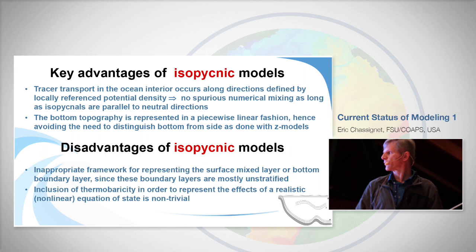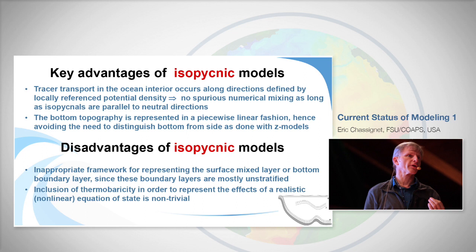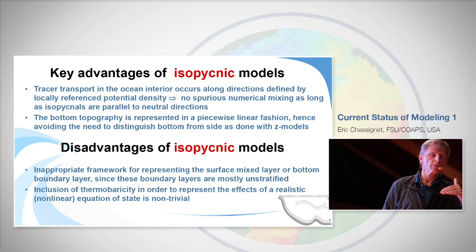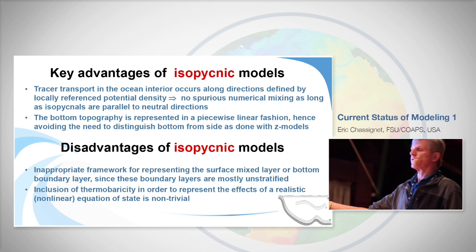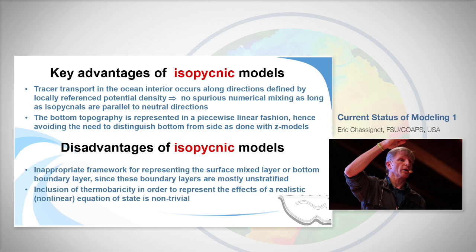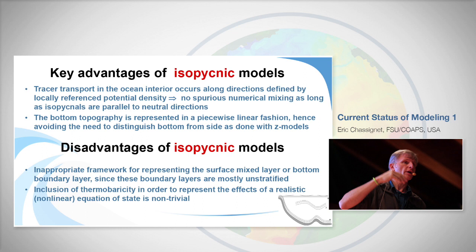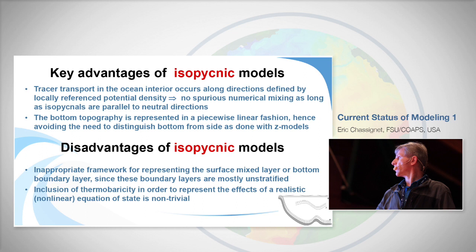The disadvantage of Z-models is the representation of tracer advection and diffusion along inclined isopycnals — it's difficult to do properly because you have to rotate the tensor. Diffusion takes place along isopycnals, and if you advect temperature and salinity horizontally, they may not end up at the right location in isopycnal layers. Also, bottom topography is represented as staircase steps, which is not natural and introduces errors.